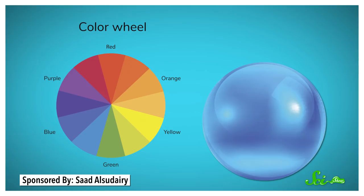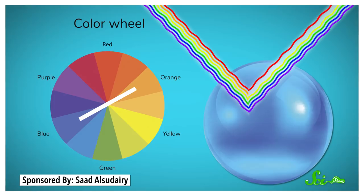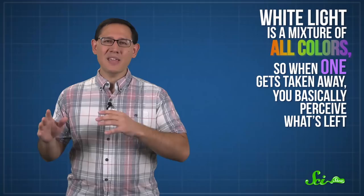Or because of complementary colors, something can appear blue because it only absorbs the color of light that's opposite on the color wheel, in this case orange. White light is a mixture of all colors, so when one gets taken away, you basically perceive what's left, the complementary color.